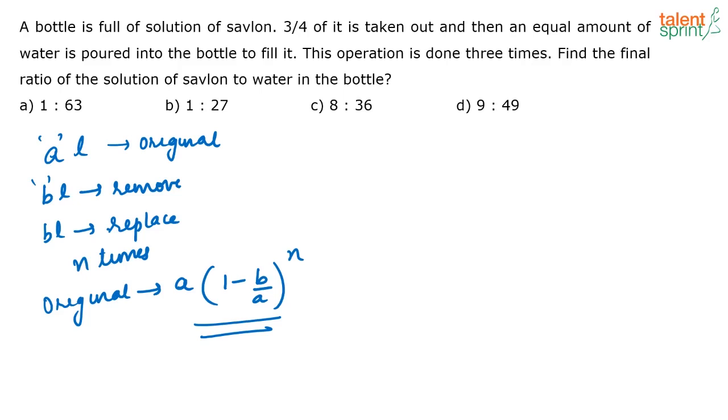So this is how I have written the formula. There was A liters of an original liquid, out of which I have withdrawn B liters of the original liquid and replaced it with some other liquid, let's say water, and you are keeping on doing this process for N times. So in the final solution, the amount of original liquid that will be present is A times (1 minus B/A) whole to the power N.